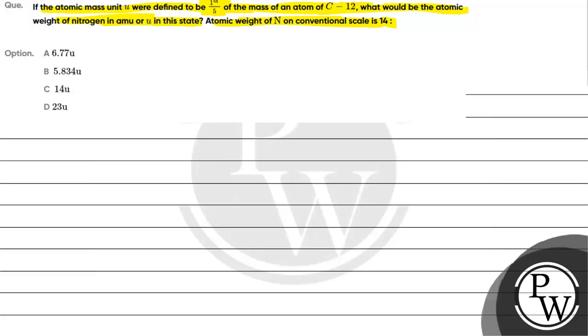Option A is 6.77 U. Option B is 5.834 U. Option C is 14 U. Option D is 23 U.